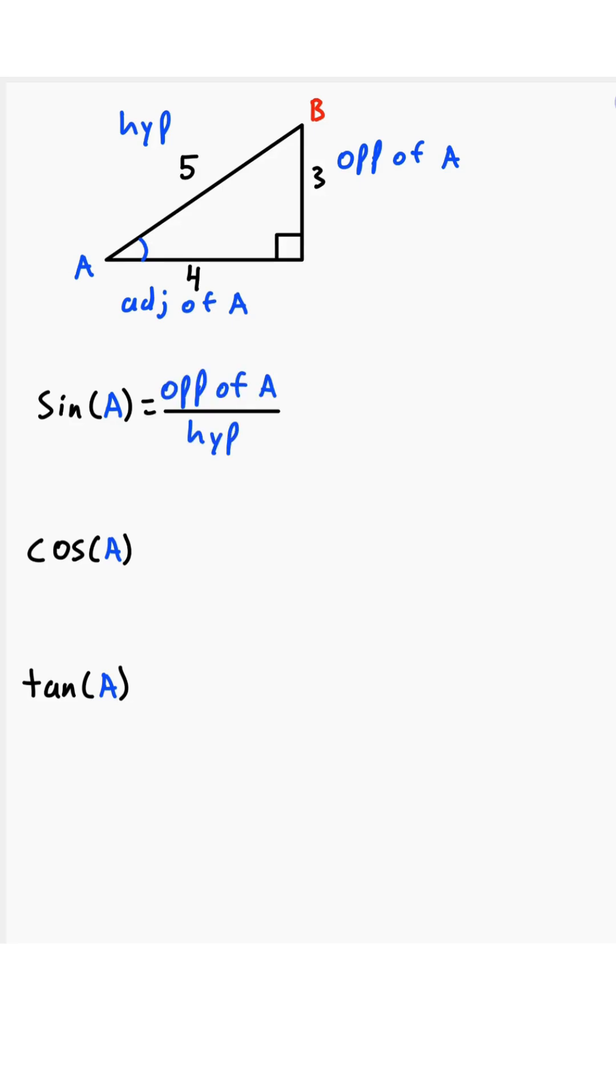Sine of a is opposite of a over hypotenuse, which is 3 over 5. Cosine of a is adjacent of a over hypotenuse, which is 4 over 5. And tangent of a is opposite of a over adjacent of a, which is 3 over 4.